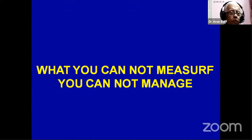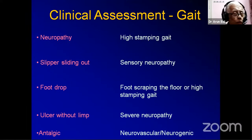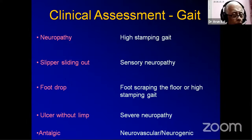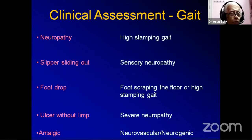The dictum we must remember: what you cannot measure, you cannot manage. Most of the time we don't see the patient walking — we see the patient lying down. It is important to see the patient walking; you get a variety of information. You may see a high-stepping gait, slippers coming out, a patient walking comfortably with a foot ulcer. If the patient is limping — an antalgic gait — usually diabetic foot patients don't limp, so that means something else is happening which you need to investigate.